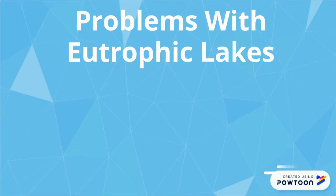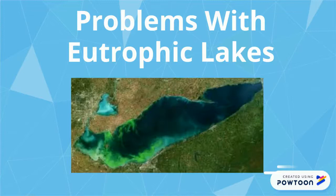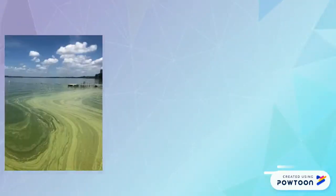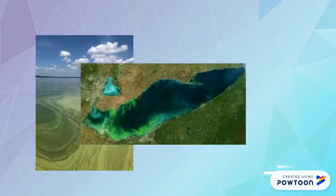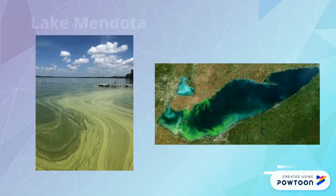Some issues with eutrophic lakes are the formation of algae blooms, which cause a variety of issues, such as cutting off the oxygen supply for aquatic life because they form in such dense masses. Some examples of these types of lakes are Lake Mendota here in Madison, and also Lake Erie.